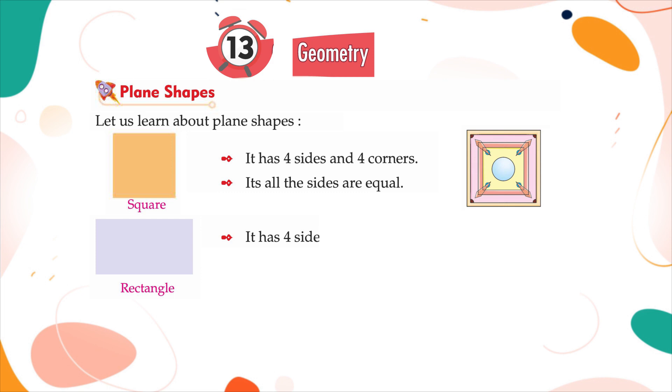Rectangle: It has four sides and four corners. Its opposite sides are equal.